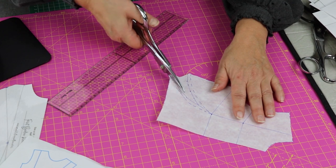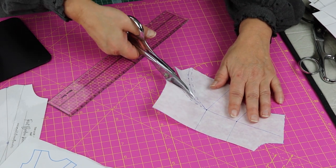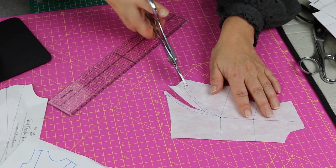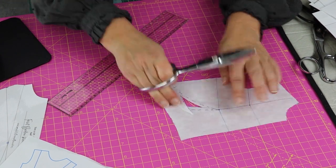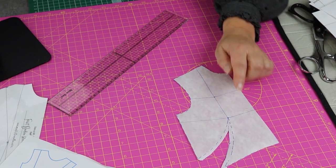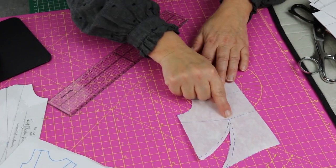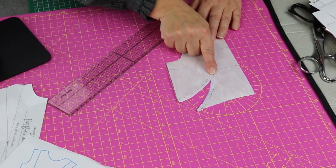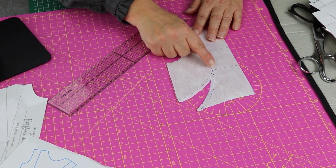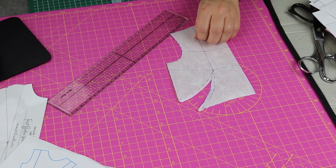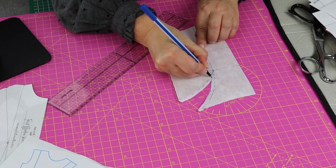And don't forget we would not sew the dart right to the bust point. We would sew it further back than the bust point. We don't want the dart sewn right to the bust point, so it would just be sewn to here.